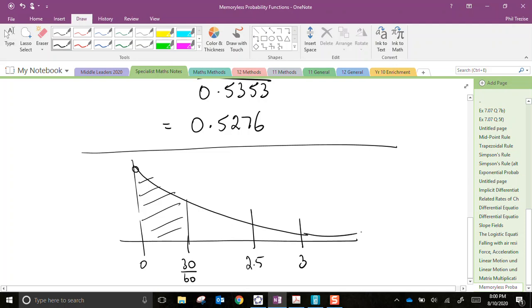If you say, what is the probability that the caller will be answered in less than three minutes on the condition that they've already been on hold for 2.5, that fraction of the much larger remaining possible time is still going to be 0.5276. It's almost like the probability function resets from any arbitrary starting point.